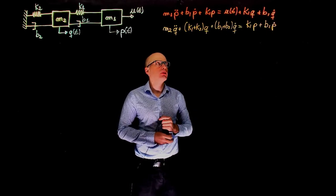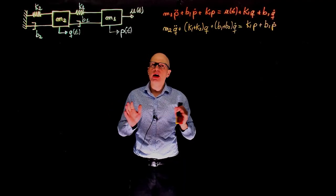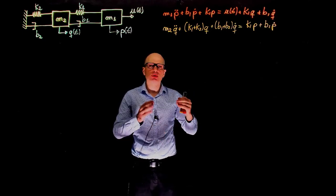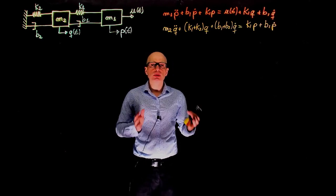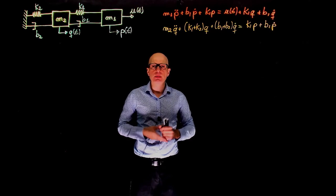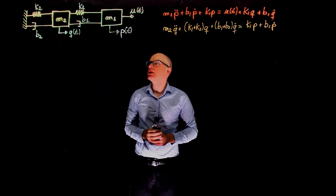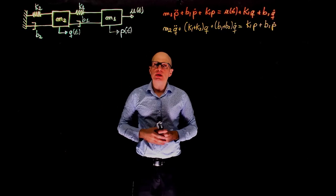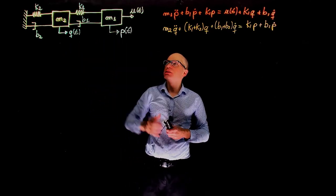Now that the equations of motion are done, we can move on to the second step: define our state variables and rewrite these expressions as a function of them. For this particular example we have two second-order equations. To write them in state-space form, we need each to be written as two first-order differential equations, meaning we'll need four state variables. A good first attempt is to look at the system and see which elements can store energy, so we can predict future behavior given the current state and input. For this system we choose the masses' displacement and speed, since each mass stores kinetic energy dependent on speed, and the springs store potential energy dependent on displacement.